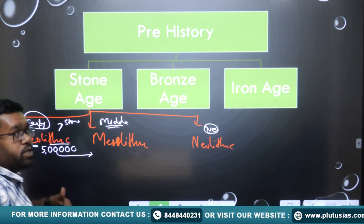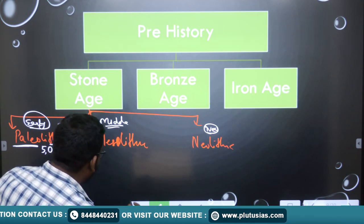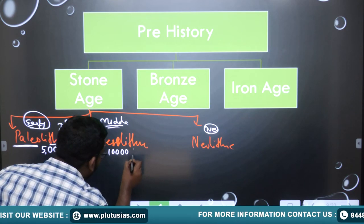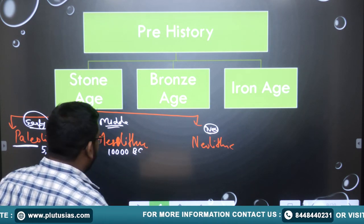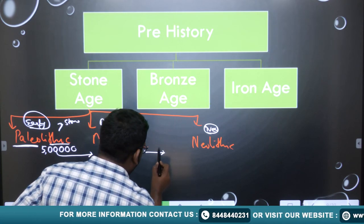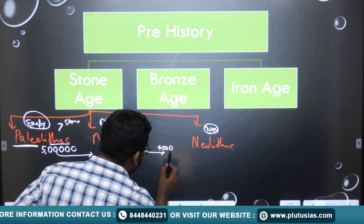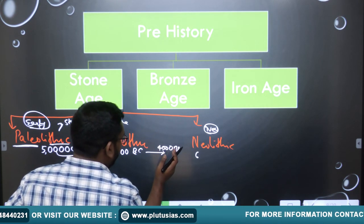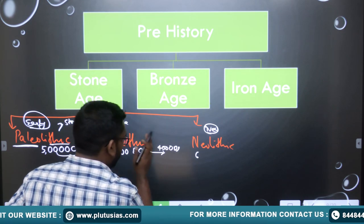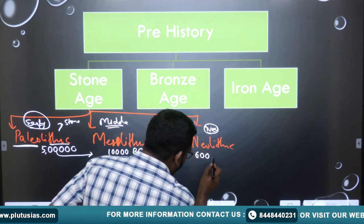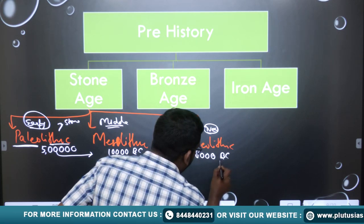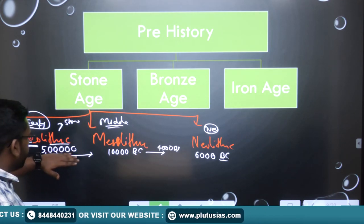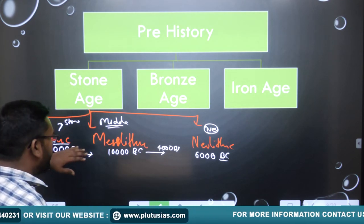The Paleolithic period started around 5 lakh years ago and continued until the Mesolithic Age began. The Mesolithic period started in India around 10,000 BC and continued until around 4,000 BC. Then the Neolithic period started approximately 2,000 years before the end of Mesolithic, around 6,000 BC in India.